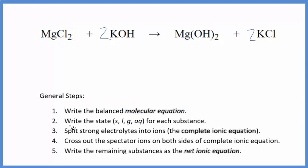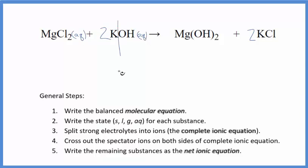Now we can write the state for each substance. Chlorides are very soluble — aqueous. Potassium hydroxide is a strong base, so that's going to be soluble. It's going to dissociate into its ions. Magnesium hydroxide — most hydroxides aren't soluble.